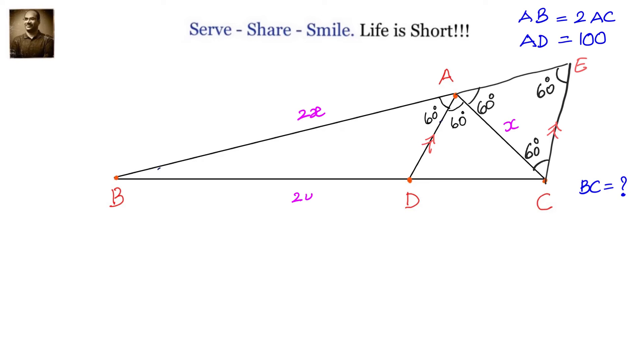Also, we know that AB equals 2 times AC. So if AB is 2x, then AC will be x and AD is the angular bisector. So we know that angular bisector divides the side in the ratio by which the angle is made. That means BD by DC equals AB by AC.